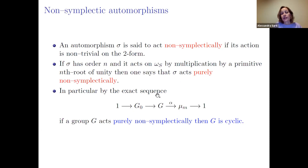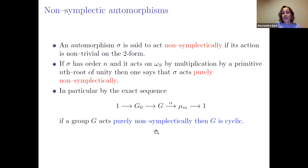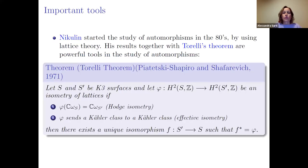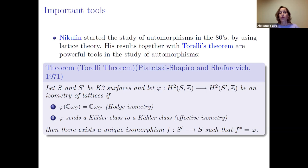If every element of g acts purely non-symplectically, then g is a cyclic group. These groups are perhaps more tractable than the general case. One important theorem is the Torelli theorem — a beautiful result showing the power of lattice theory. Nikulin began the study of automorphisms in the 1980s, developing machinery from lattice theory that allows results about isometries of lattices to be pulled back to K3 surfaces.